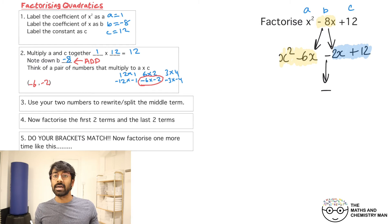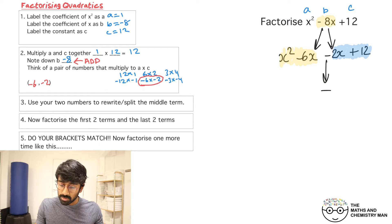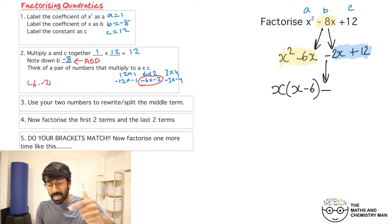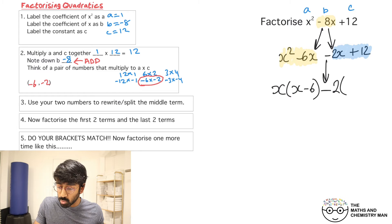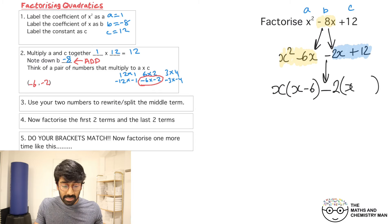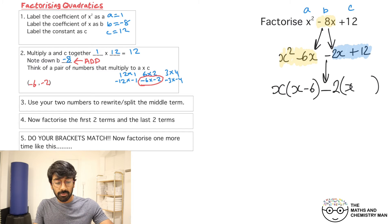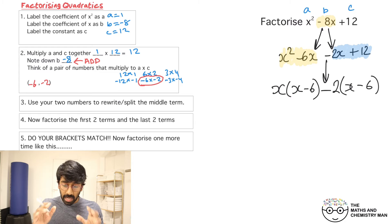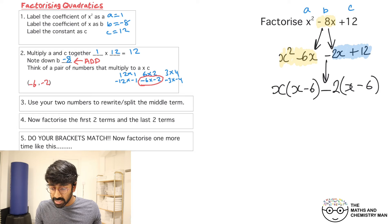Factorize the first two terms highlighted in yellow, and the last two in blue. Bring the minus sign straight downwards. From x squared and 6x, factorize out an x, leaving x minus 6. For the blue part, 2x and 12 — take out a 2, giving x minus 6 inside. Check: do the brackets match? We have x minus 6 and x minus 6 — yes, they match, so this is correct.